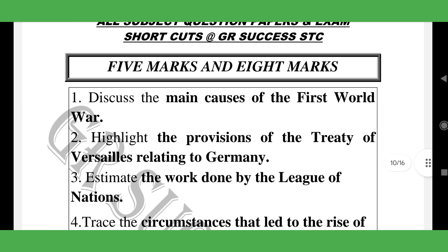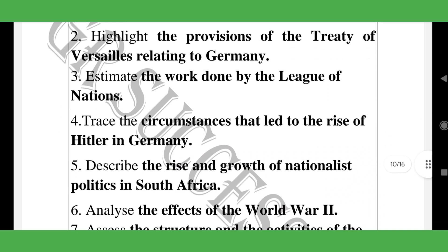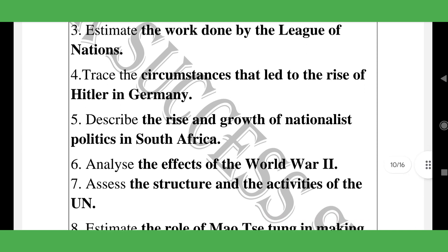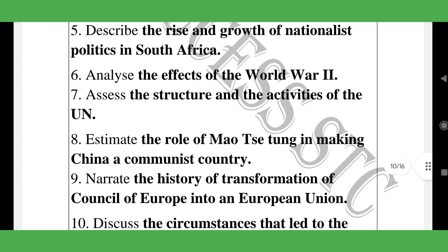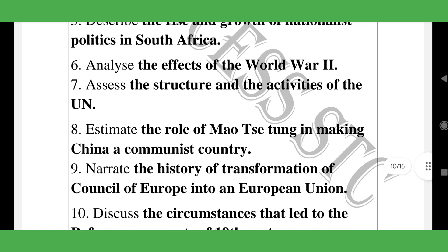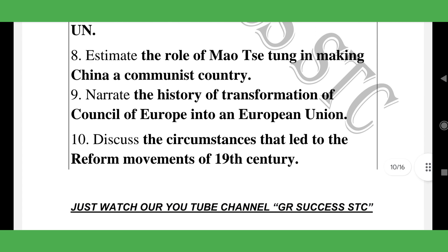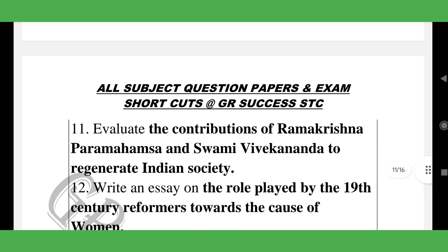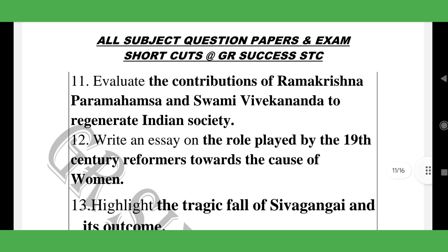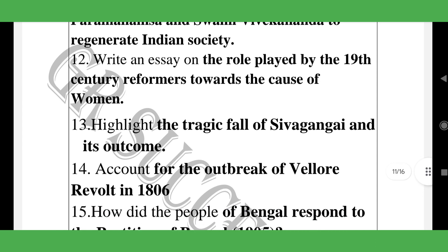Five-mark and eight-mark questions include: main cause of the First World War, Treaty of Versailles relating to Germany, League of Nations, Hitler in Germany, rise and growth of nationalist parties in South Africa, effects of World War Two, structure and activities of the United Nations, role of Mao Zedong in making China a communist country, Council of Europe and the European Union, circumstances that led to reform movements of the 19th century, Ramakrishna Paramahamsa, Swami Vivekananda's contributions in the 19th century.